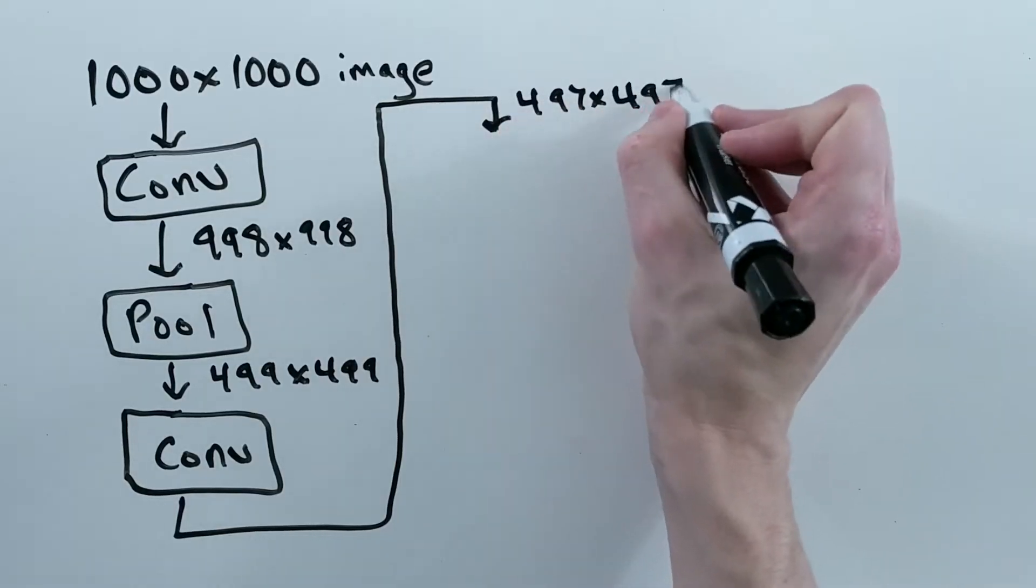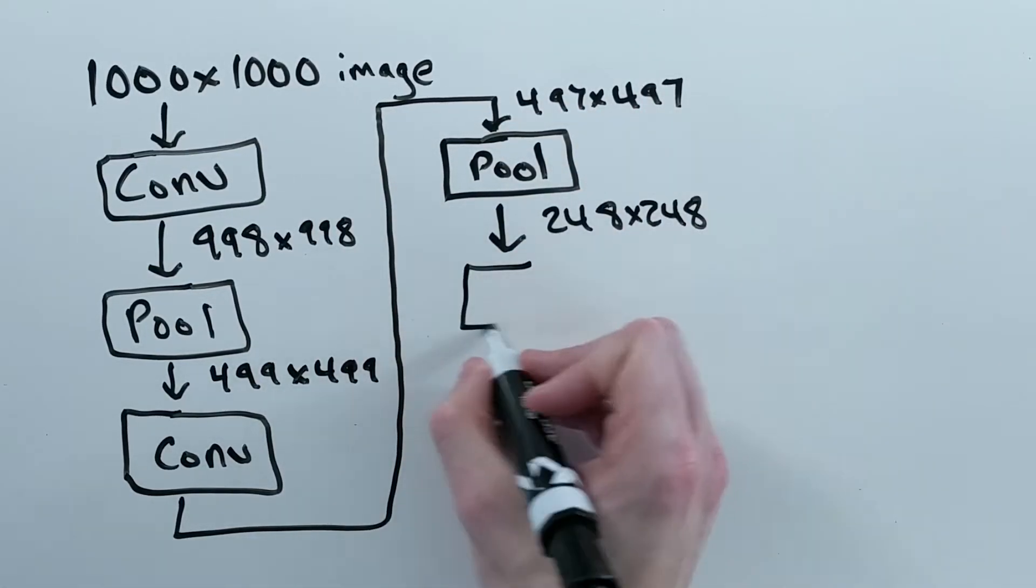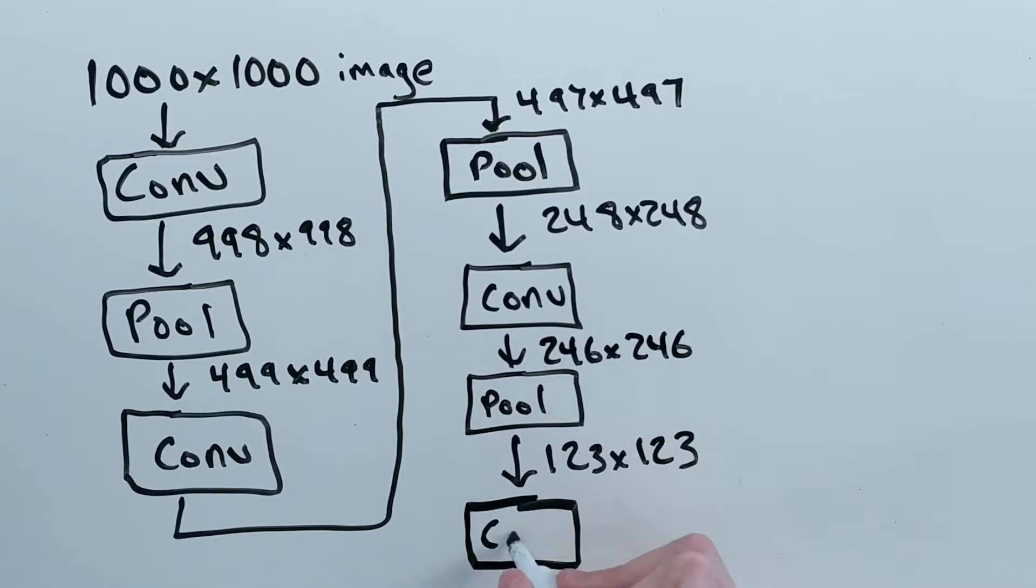Given a 1000x1000 image, you could reduce the intermediate feature size to 1x1 in the following manner.